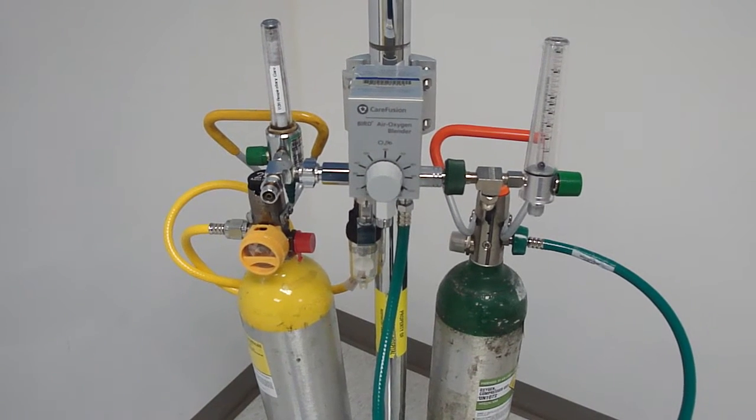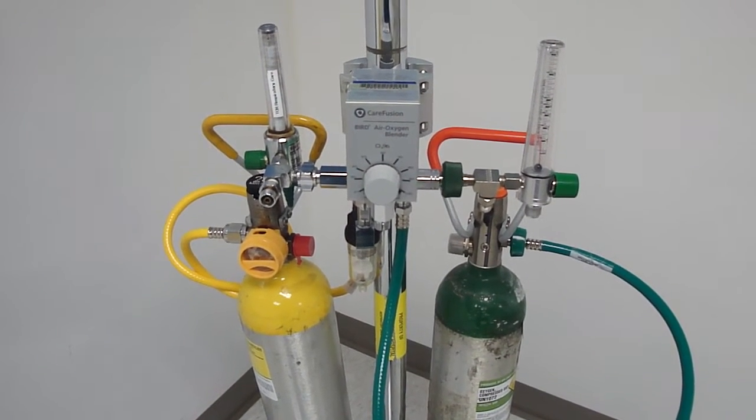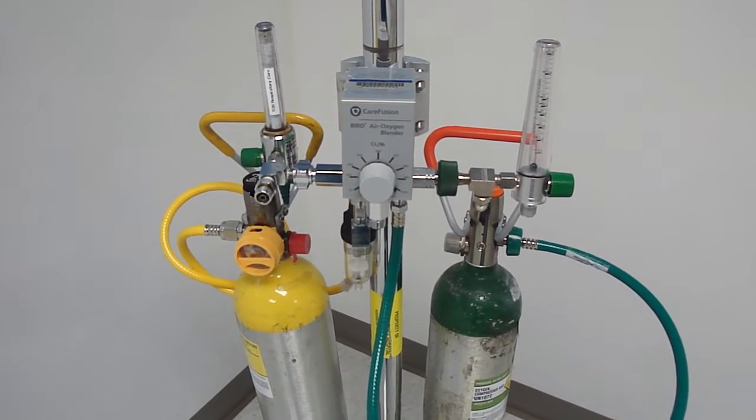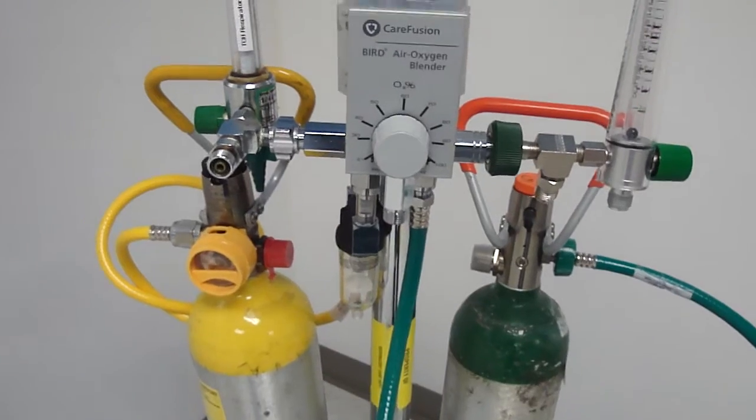You're going to have an oxygen cylinder, which is the green, and an air cylinder, which is the yellow. Both of them are connected with high pressure hose to the blender itself.